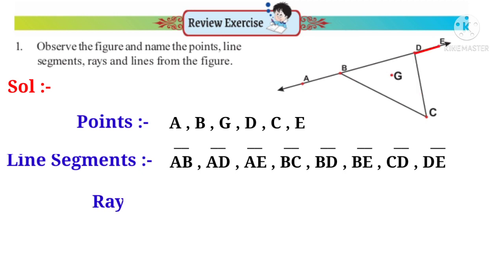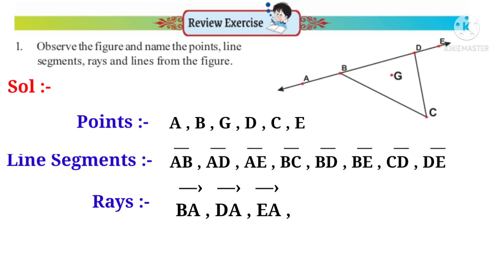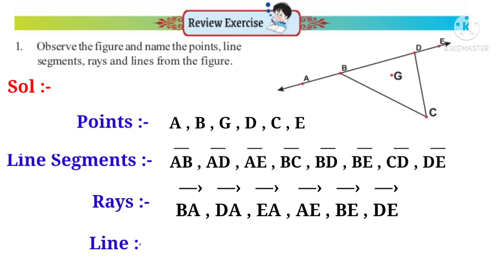Rays: starting from B — ray BA; starting from D — ray DA; starting from E — ray EA; starting from A — ray AE; starting from B — ray BE; starting from D — ray DE. Lines: the line is passing through points A, B, D and E, so it can be named as AB, AD, AE, BD, BE or DE.